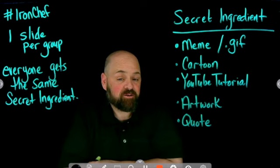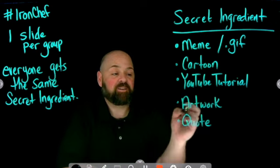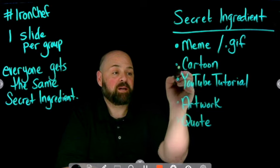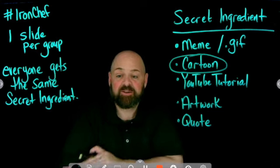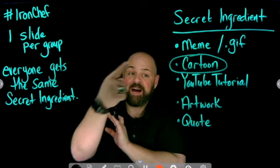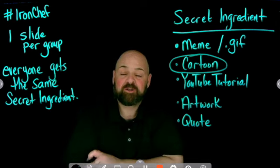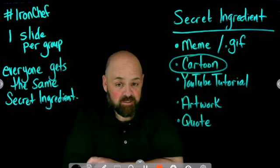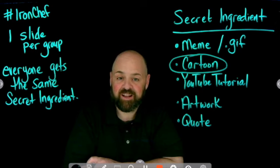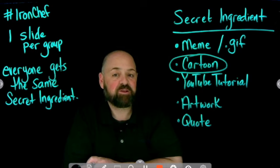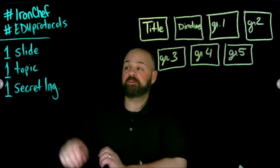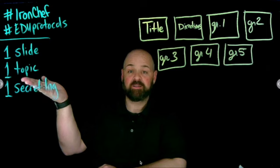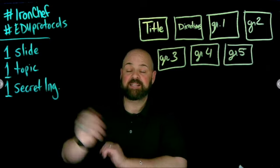The way the secret ingredient works is you just decide which one it is. Maybe you're going to do the cartoon for this lesson — so now every single group has to find a cartoon that discusses or somehow embodies the topic of their slide. It's also a nice way of unifying the slides visually together. Every group has one slide on one topic and a secret ingredient.